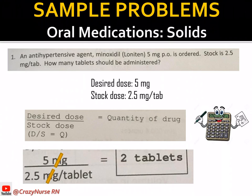Cancel the milligrams units, then divide 5 by 2.5, which gives 2. Retain the tablet unit since it was not cancelled. So we will give 2 tablets to our patient in order to yield 5 milligrams of minoxidil as ordered by the doctor.